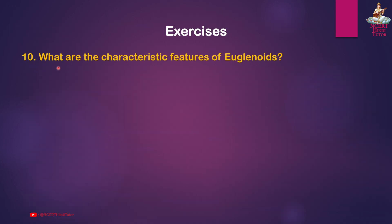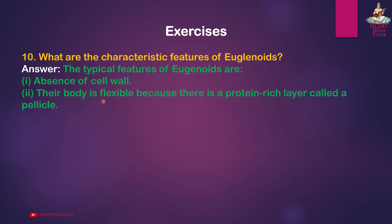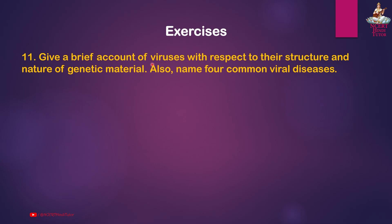Deuteromycetes — mode of nutrition: decomposes, saprophytic, or parasitic; mode of reproduction: asexual spores called conidia. Question 10: What are the characteristic features of euglenoids? Answer: First, absence of cell wall. Second, their body is flexible because there is a protein-rich layer called a pellicle. Third, two flagella of different lengths are found. Fourth, they are autotrophic in the presence of sunlight and heterotrophic in the absence of sunlight.